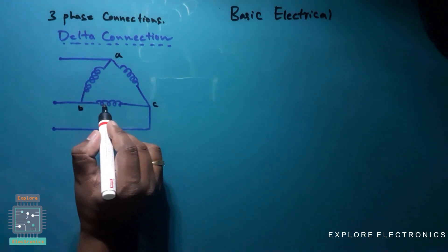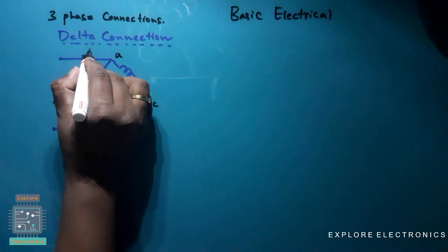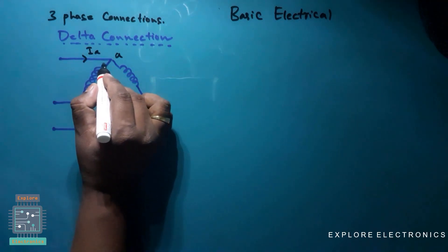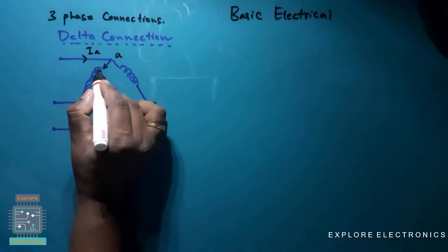So if you write the currents over here, this is Ia, that is line current, and if we treat the current flowing through this path, that is Iab.